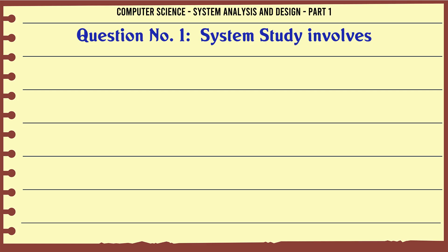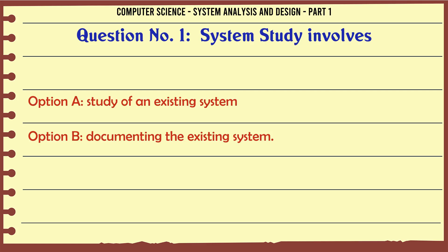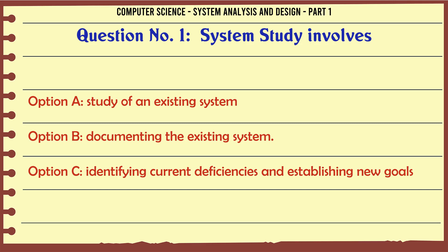System study involves: A. Study of an existing system. B. Documenting the existing system. C. Identifying current deficiencies and establishing new goals. D. All of the above.